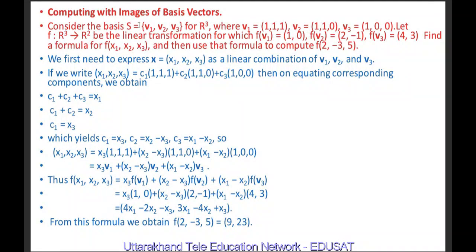Since S is a basis for R³, every vector in R³ can be expressed as a linear combination of elements of S. So we write (x1, x2, x3) = C1·V1 + C2·V2 + C3·V3. With V1 = (1,1,1), V2 = (1,1,0), V3 = (1,0,0), we have C1·(1,1,1) + C2·(1,1,0) + C3·(1,0,0).